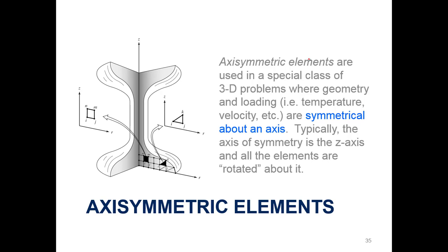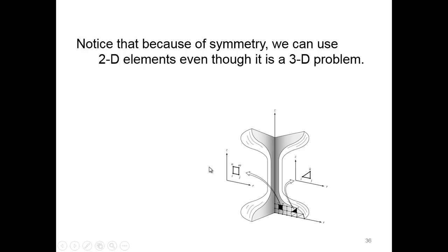Let's look at axisymmetric elements. These are used in special cases of 3D problems where the geometry and loading are symmetrical about an axis. Typically the axis of symmetry is the z-axis and all the elements are rotated around it. In this case we have an axis of symmetry right here along the z, and if everything else is symmetric, the forces applied to elements will be the same. So we can just look at this case instead of looking at the whole model, which minimizes computational time and expense. Because of this symmetry we can use 2D elements instead of 3D elements.